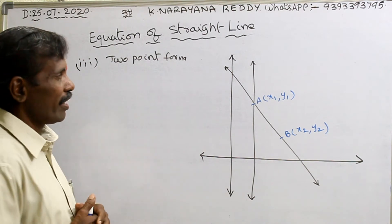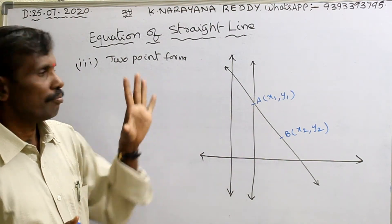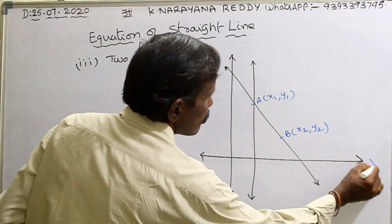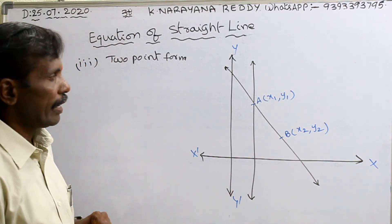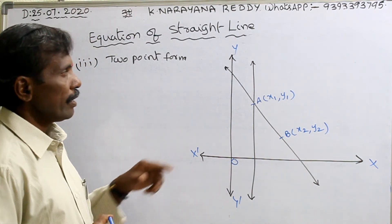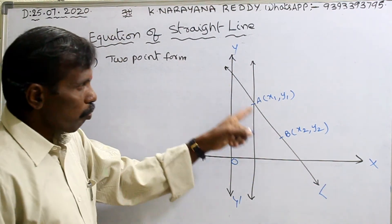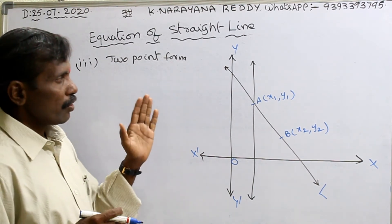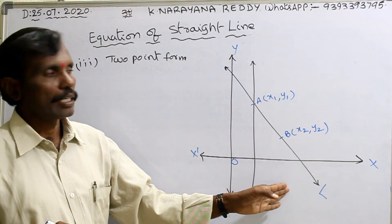Now, how to find the equation of a straight line when two points are given? Here, (x, y) is a plane with origin at (0, 0). A and B are two points, and line L passes through points A and B. There are two conditions: one is if the line is non-vertical.